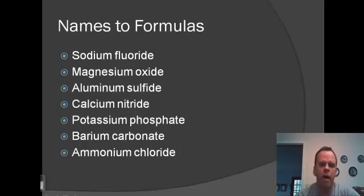Sodium fluoride. Sodium is Na, fluoride is fluorine, F. We know Na is plus one, fluorine is minus one. We want to put these together in a way that balances out the charges so that they are neutral. So since there's one positive and one negative, sodium fluoride would be NaF.